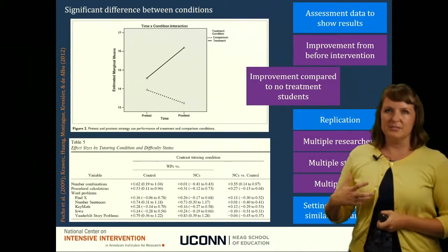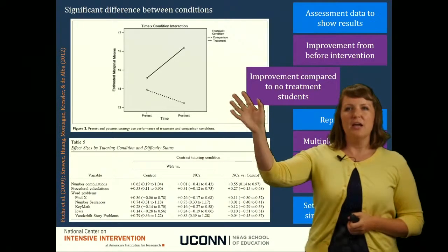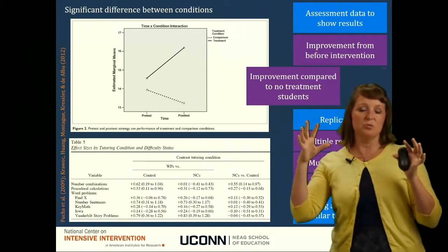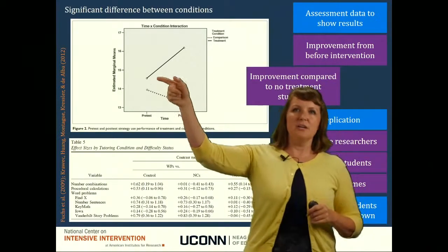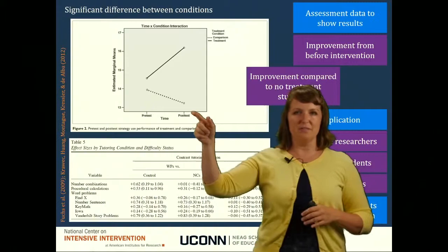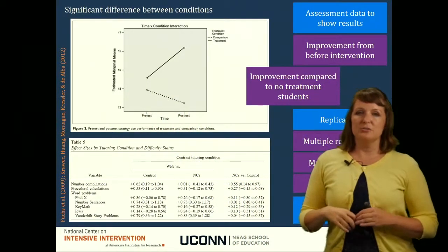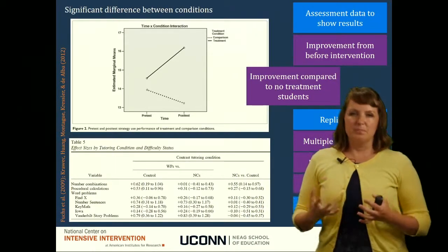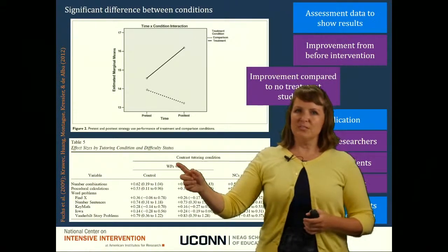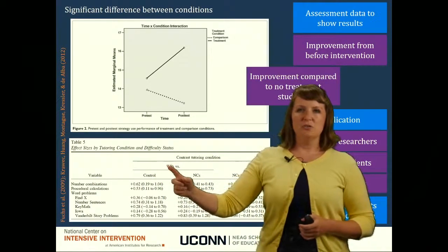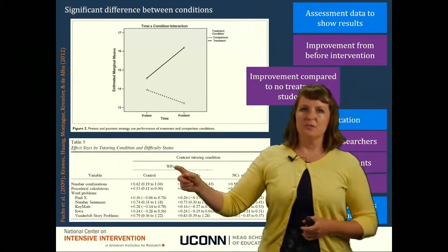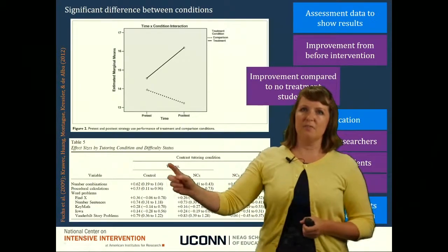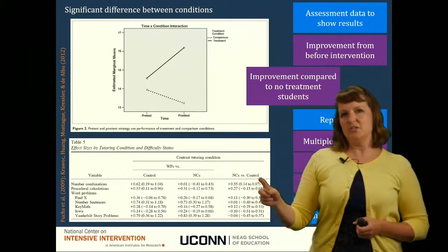This example is also about assessment data — a collection of studies by Jennifer Krawick and Lynn Fuchs. Here I can see improvement compared between intervention students and non-intervention students. In this study, here are the students that received intervention and here are the students that did not. We see the gap widened quite a bit for students that do not participate in the math intervention. This other graph presents effect sizes — students who received a word problem intervention versus students in a control group, and versus students in a number combination intervention — so we can look at these comparisons to see if there was improvement compared to students that did not receive treatment.